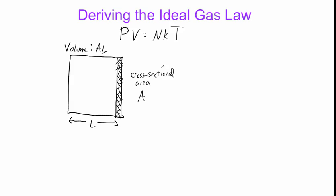Inside this box we're going to have a single particle. This particle is moving with some velocity at a moment in time. That velocity has an X component — we'll call that V sub X, meaning horizontal. We're assuming this particle moves according to Newton's law, so it will keep moving in a straight line until it runs into the walls of this container. We're going to assume that the particle collides with the walls elastically.